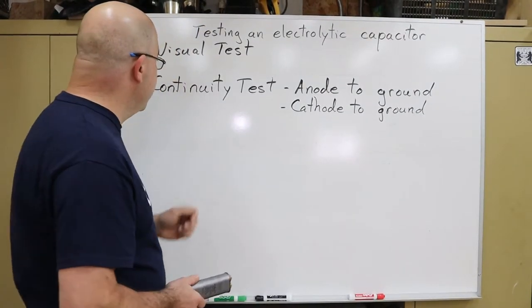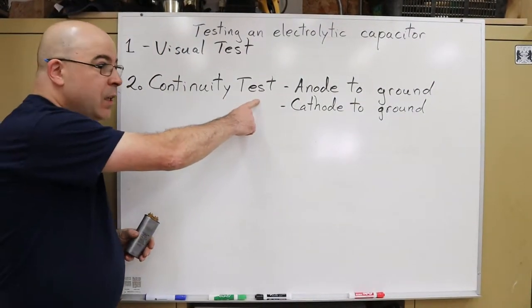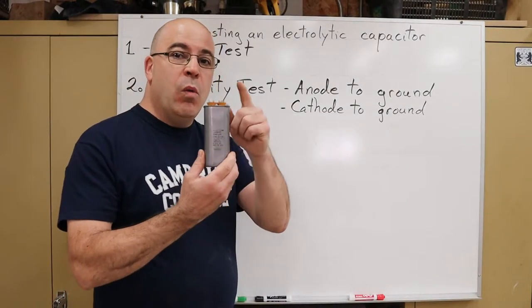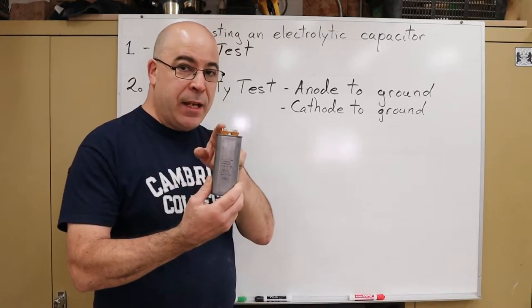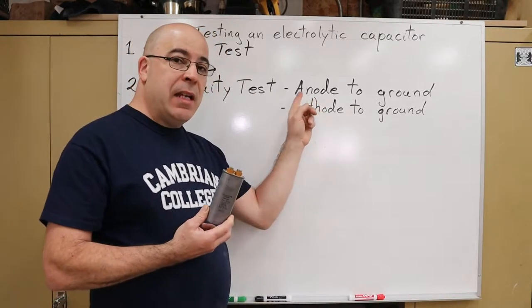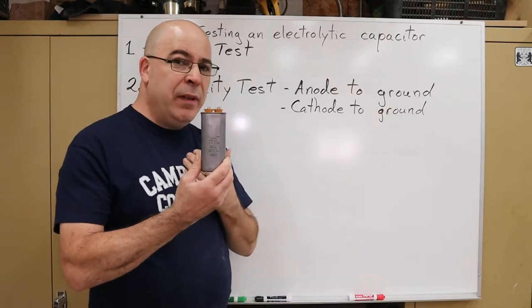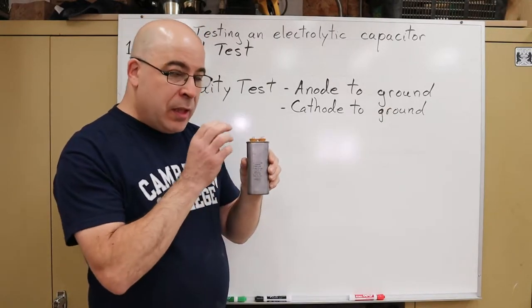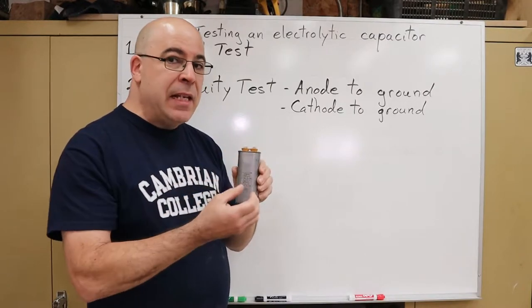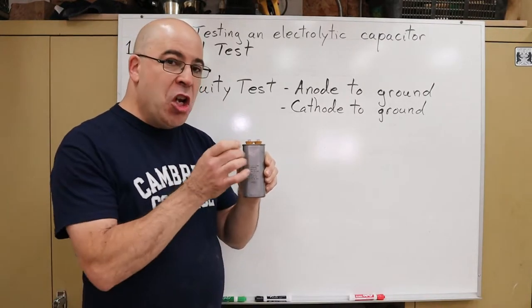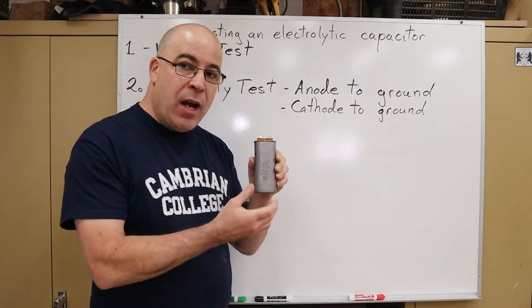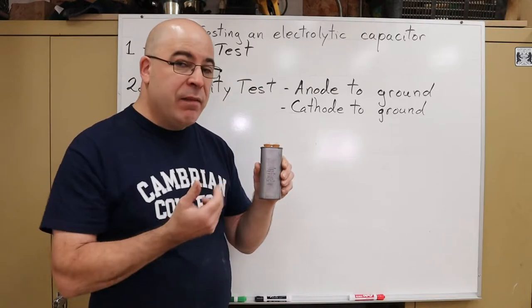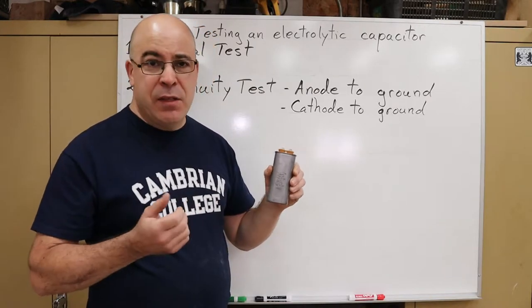Number two, our second step is continuity testing. Specifically we have two ends here. One's considered to be the anode, one's considered to be the cathode. I want to test anode to ground. When referring to ground I'm actually talking about the body. These two leads, the anode and the cathode, should not have any type of continuity with the body. If we found that there was continuity, that would indicate that I have a shorted capacitor and it's no good.